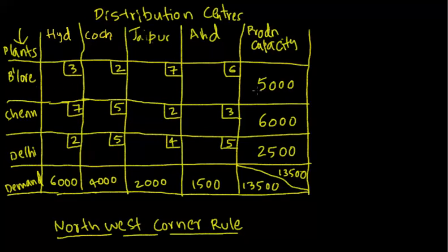Bangalore plant has a production capacity of 5000 units, Chennai plant 6000, and Delhi 2500 units, which sums up to 13500. The four distribution centers' demand: Hyderabad requires 6000 units, Kuchin 4000, Jaipur 2000, and Ahmedabad 1500 respectively, which again sums up to 13500. Since demand equals supply capacity, this is a balanced transportation problem.